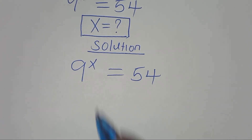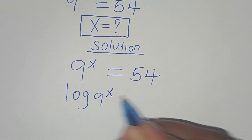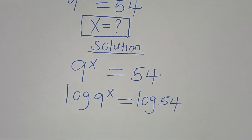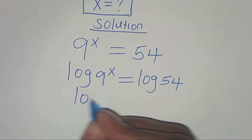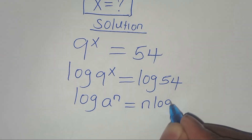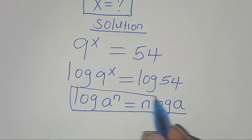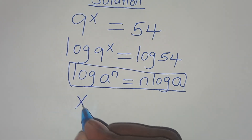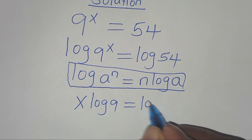To solve for x, we introduce logarithm on both sides, so we have log 9 to the power x, this is equal to log 54. We find that log 9 to the power x is in the form of log a to the power n, which we can express as n·log a. Applying this power property of logarithm, log 9 to the power x can be expressed as x·log 9, this is equal to log 54.